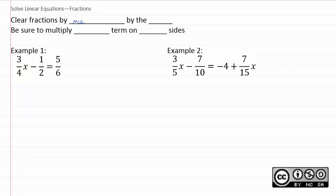We do that by multiplying by the LCD, the lowest common denominator of every denominator that you see. In order to clear the fractions, you need to multiply each term on both sides.